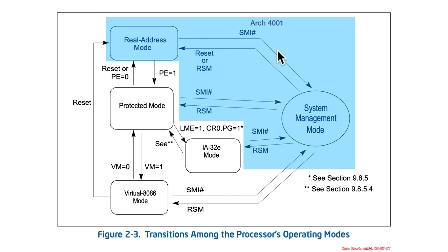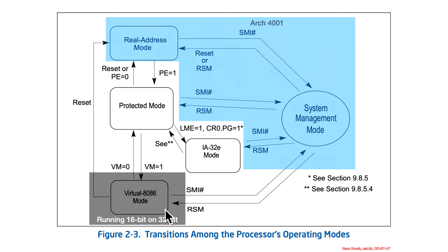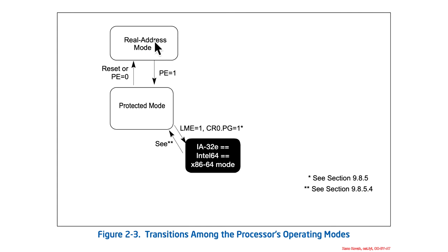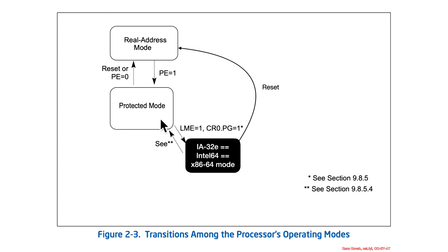To simplify: real mode and system management mode are mostly left for Architecture 4001, and virtual 8086 mode isn't even a real mode according to Intel's own manuals. Simplified down, you always start in real mode and try to get to protected mode as soon as possible. From there, a 64-bit capable operating system moves into 64-bit mode. And you always land back in real mode whenever you reset.